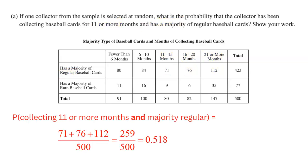I'm going to take the 71, the 76, and the 112 and add them together. So 259 total people fit the bill of 11 or more months collecting and collecting regular baseball cards, divided by the 500 total people in the sample. There was no condition here whatsoever, so my denominator has not changed. I get about 0.518, or 51.8%, as the probability.